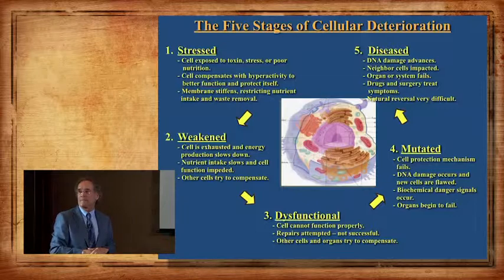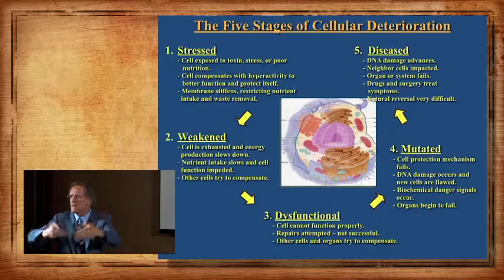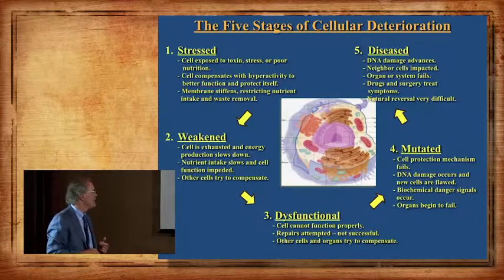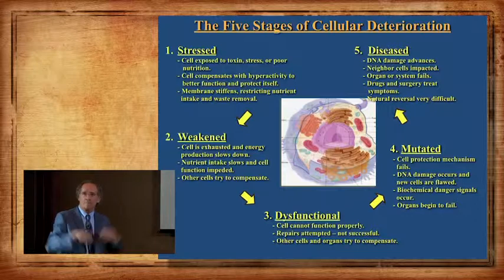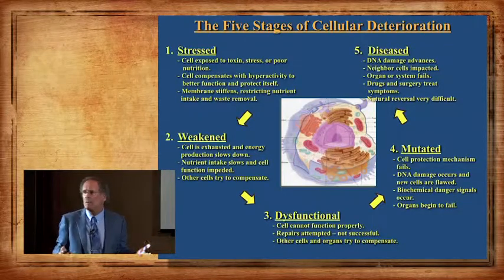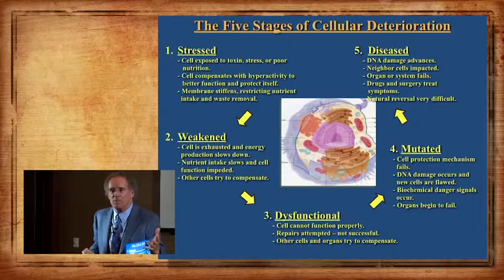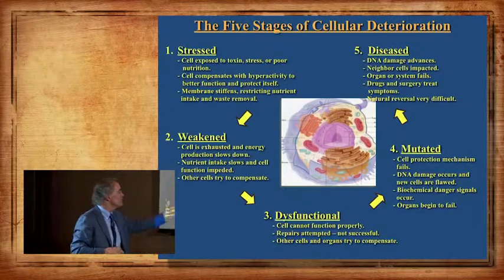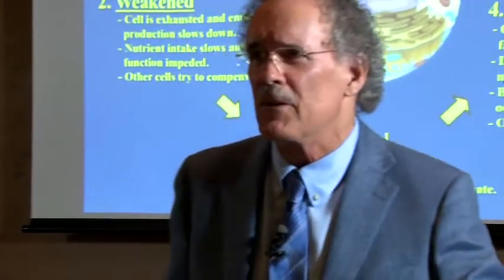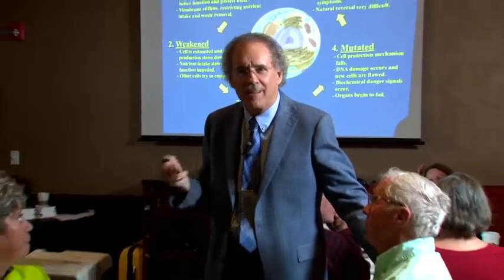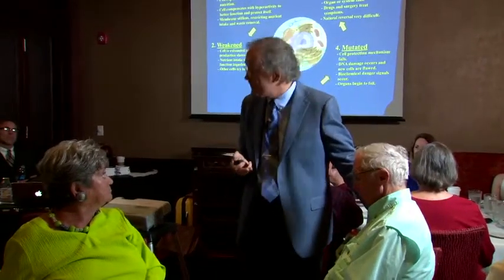Could it get the weakened ones back? Sure — do the same thing: go into the mitochondria, activate them, get the cell functioning again. Could it get the dysfunctional ones back? Sure. So we're up to 60%. Now going to the mutated ones — could we get some of them back? Some of them you could get back. Let's say we got half — we're back to 70%. So if you got 70% of the kidney working again, could you get off your dialysis? Absolutely.